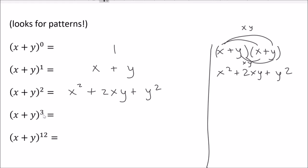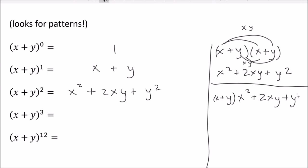What about x plus y cubed? That's the same thing multiplied by x plus y again, so I need a little side work. I get x plus y multiplied by x squared plus 2xy plus y squared — don't forget the parentheses. I'm going to distribute the x throughout this trinomial. Binomials have 2 terms, trinomials have 3. I get x cubed plus 2x squared y plus xy squared. Now let's distribute the y.